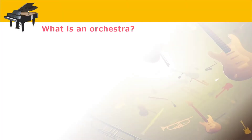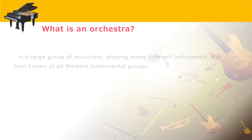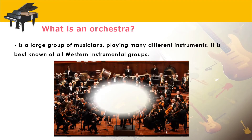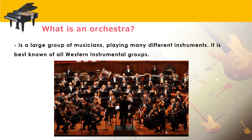So first, let us define what an orchestra is. An orchestra is a large group of musicians playing many different instruments. It is best known of all Western instrumental groups. Here is an example of an orchestra.